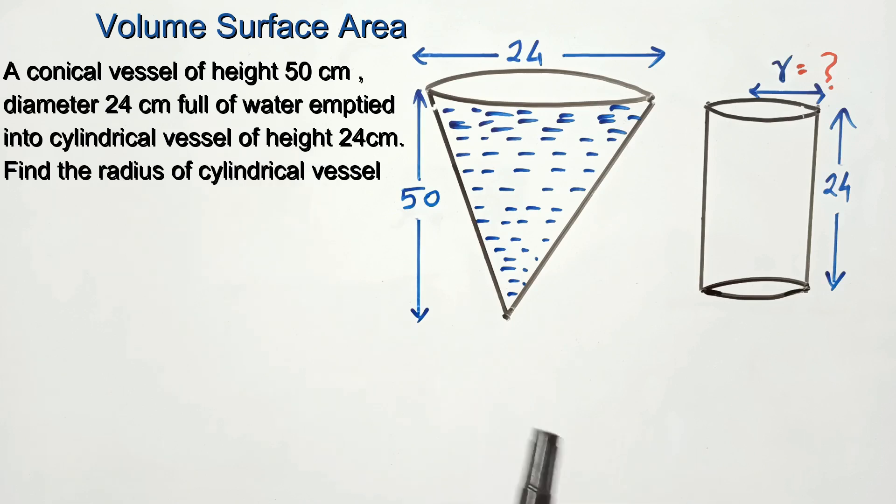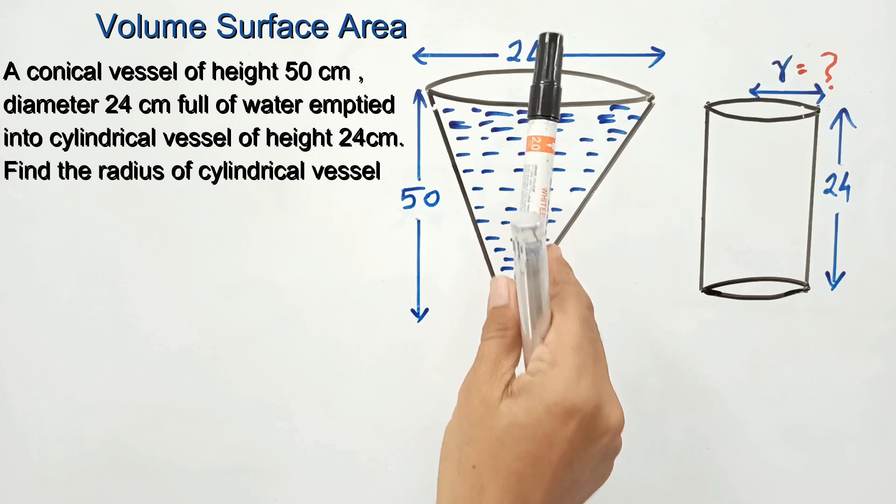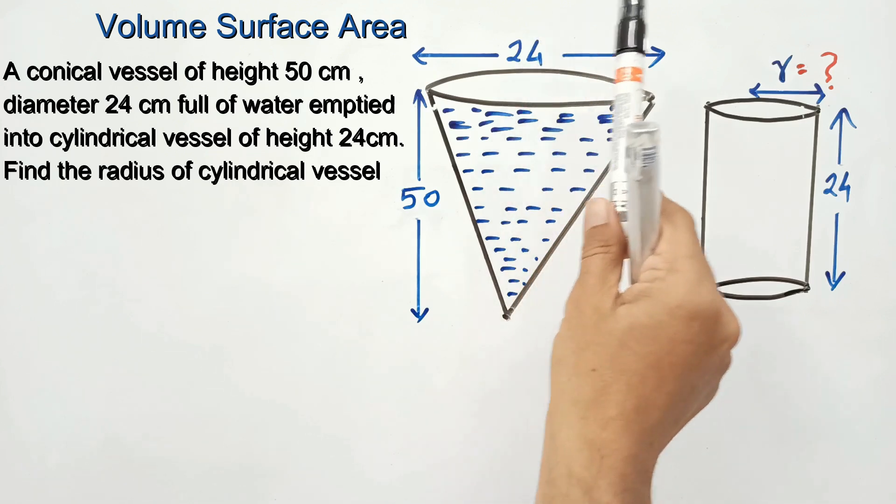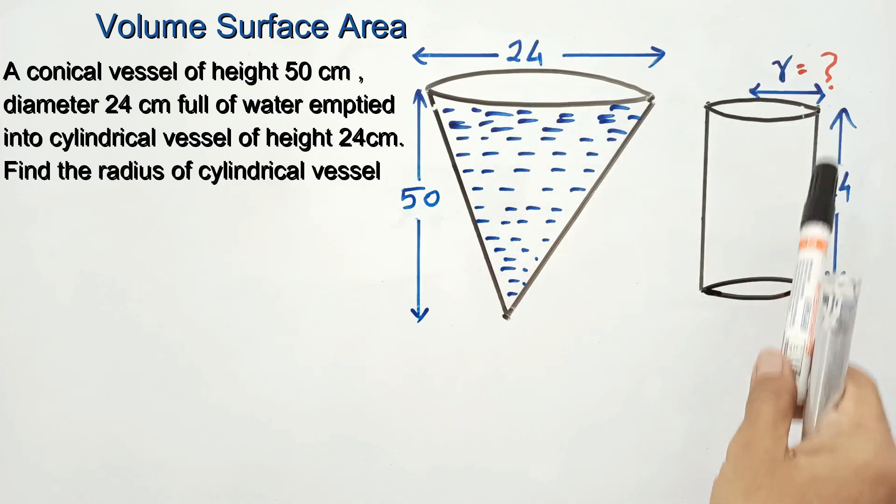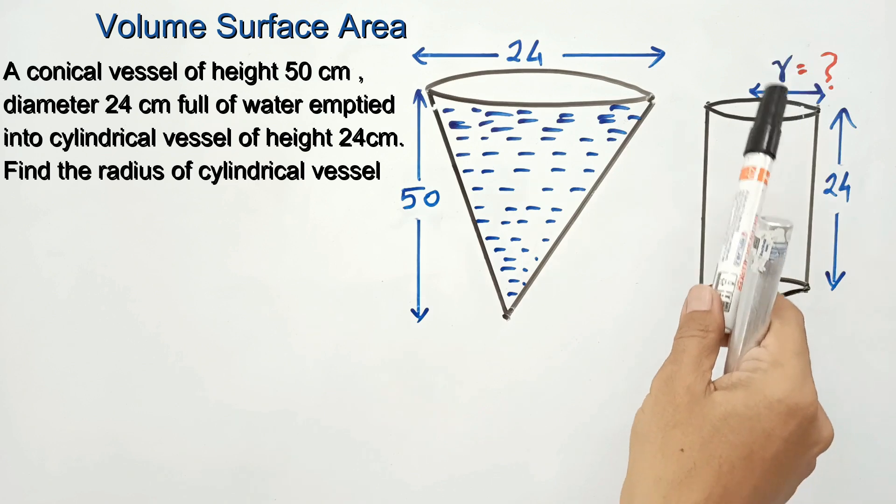In the question, it is given that a conical vessel full of water has dimensions: height 50 centimeters and diameter 24 centimeters. The full water is emptied into a cylindrical vessel of height 24 centimeters. We need to